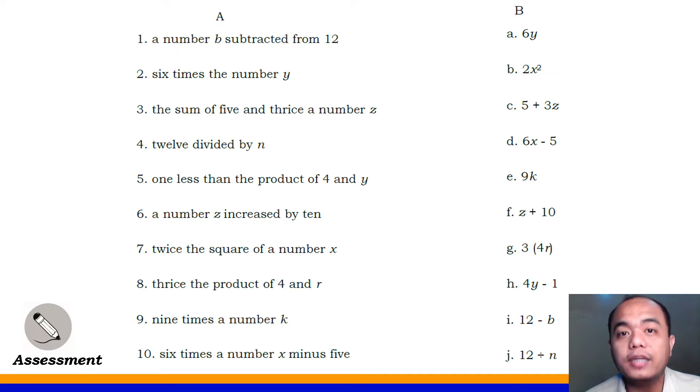We are going to match the word phrases in column A with the numerical expressions and equations in column B. Write the letter of the correct answer in your answer sheet. Are you ready? Let's start! Number 1, a number B subtracted from 12. What is the correct translation here for this given word phrase? Yes, it's letter I, 12 minus B.